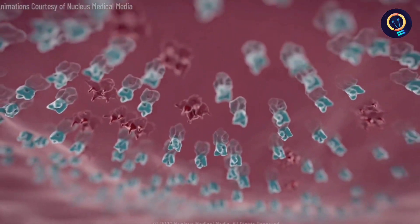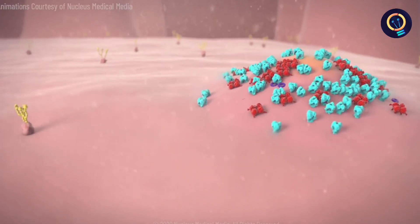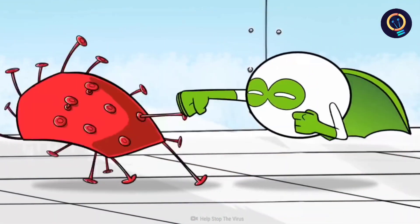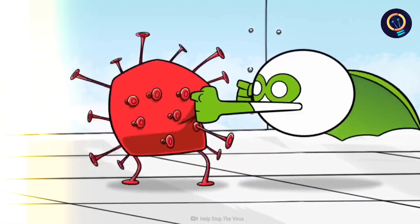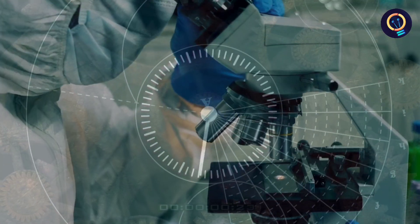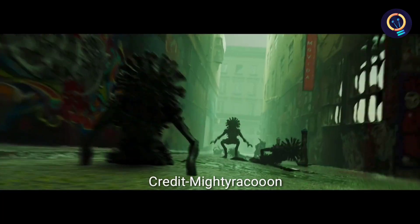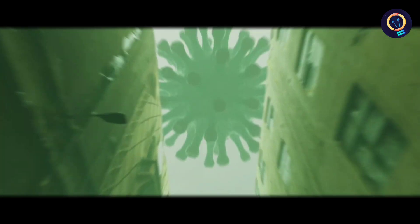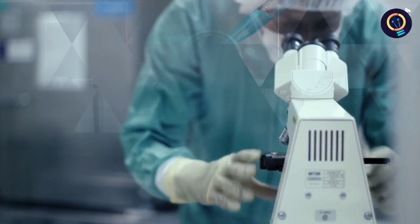That way when your body is invaded with the real virus it has an advantage because it knows how to take down the invader. But this type of vaccine with weakened or dead virus would take a few years and wouldn't prepare your immune system to fight against the evolved or mutated versions of corona.